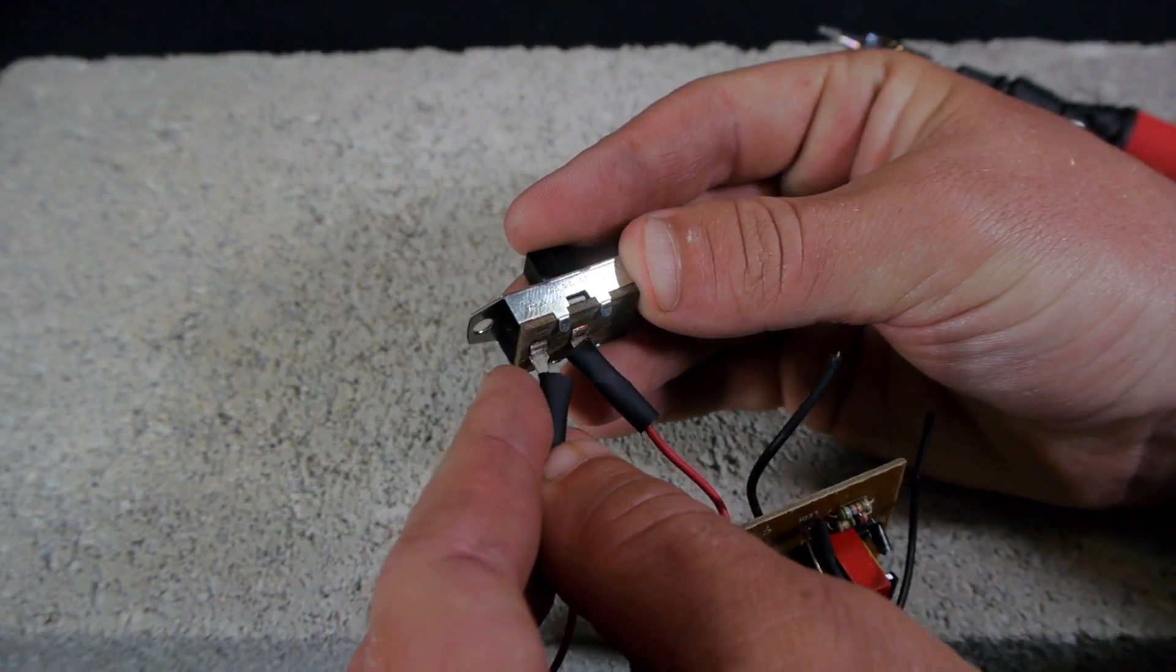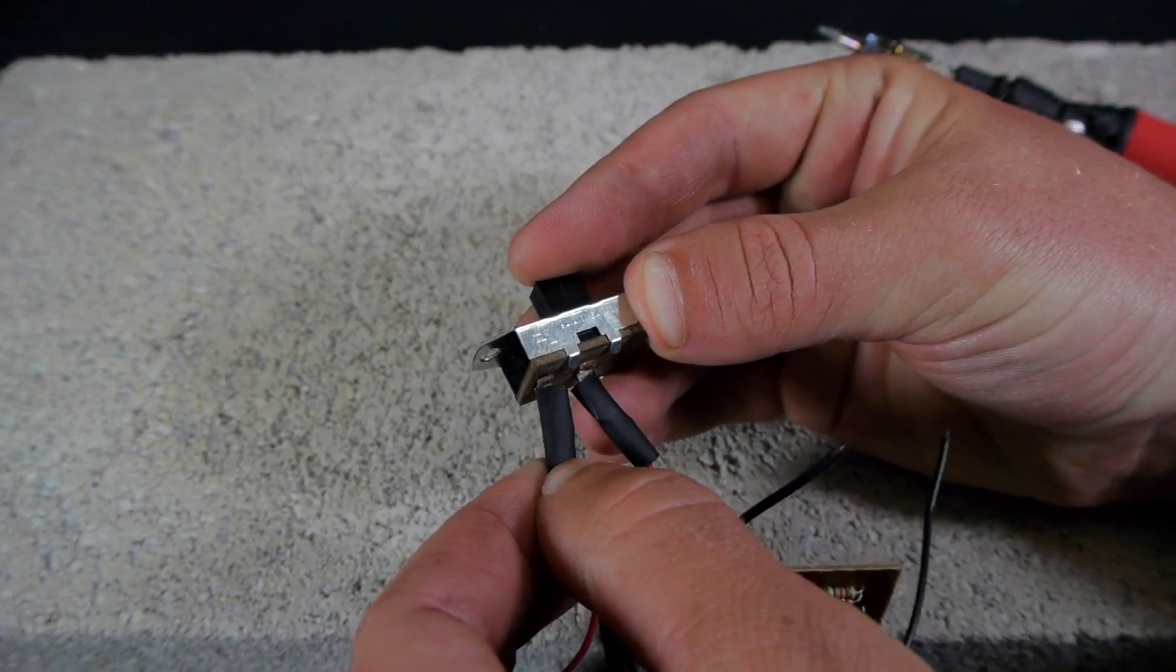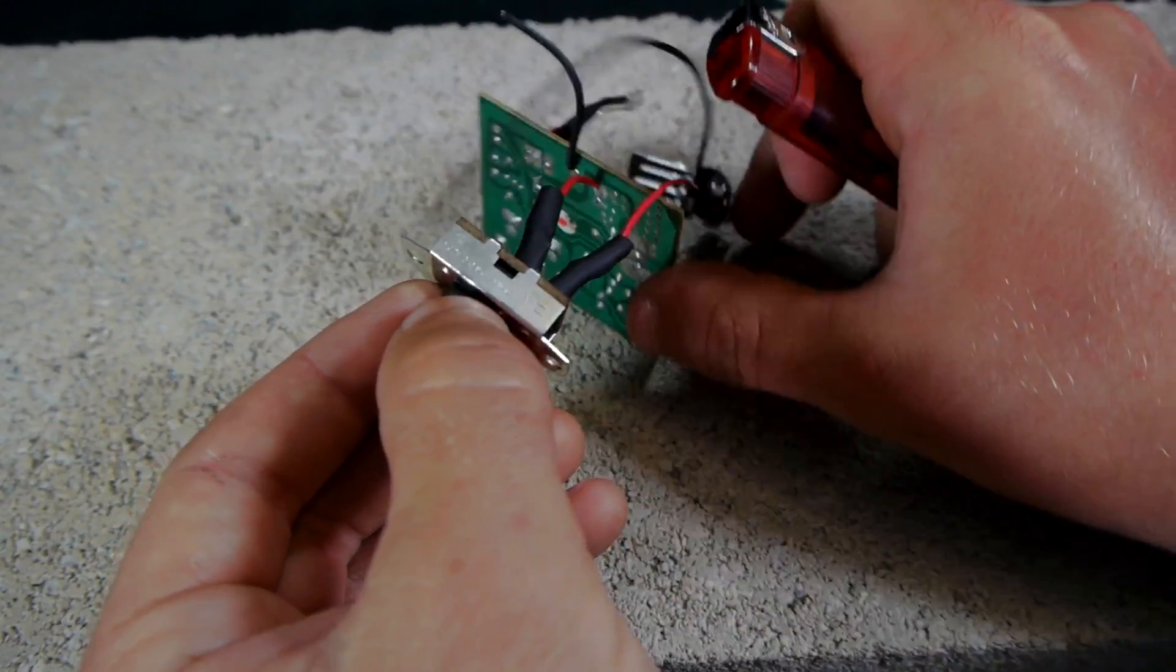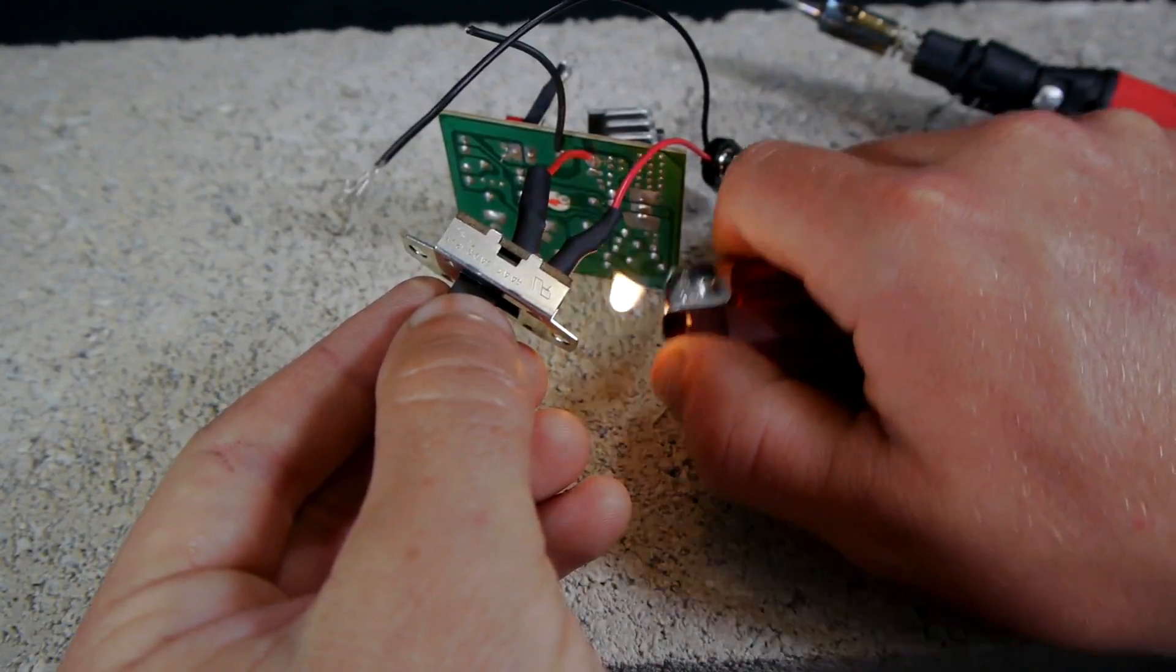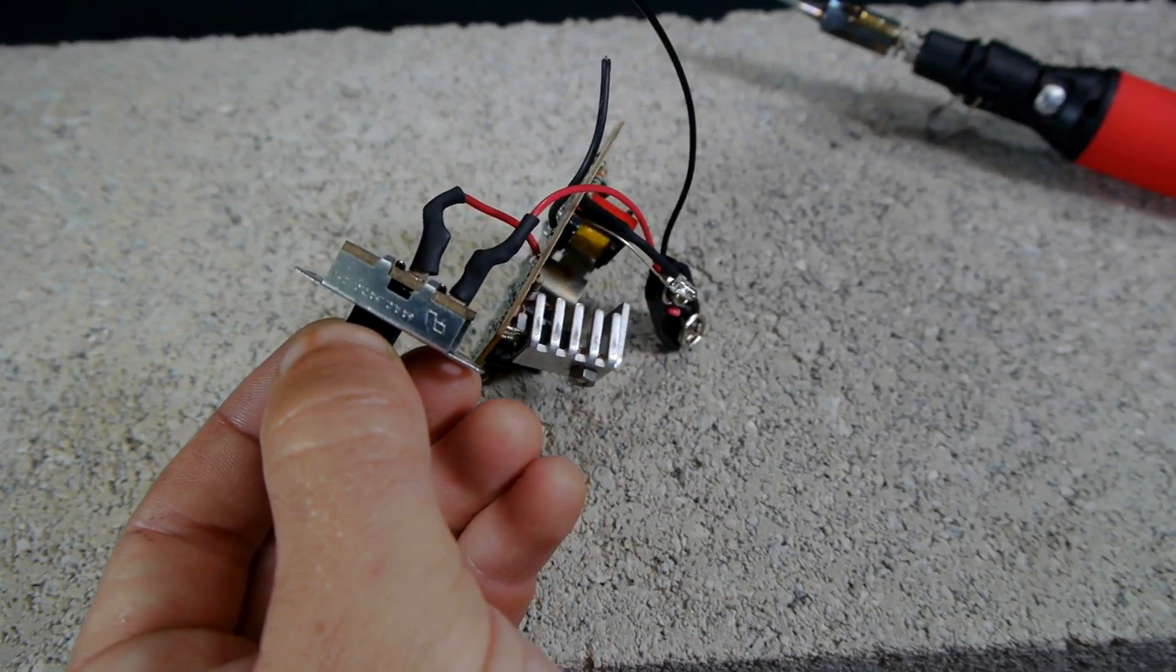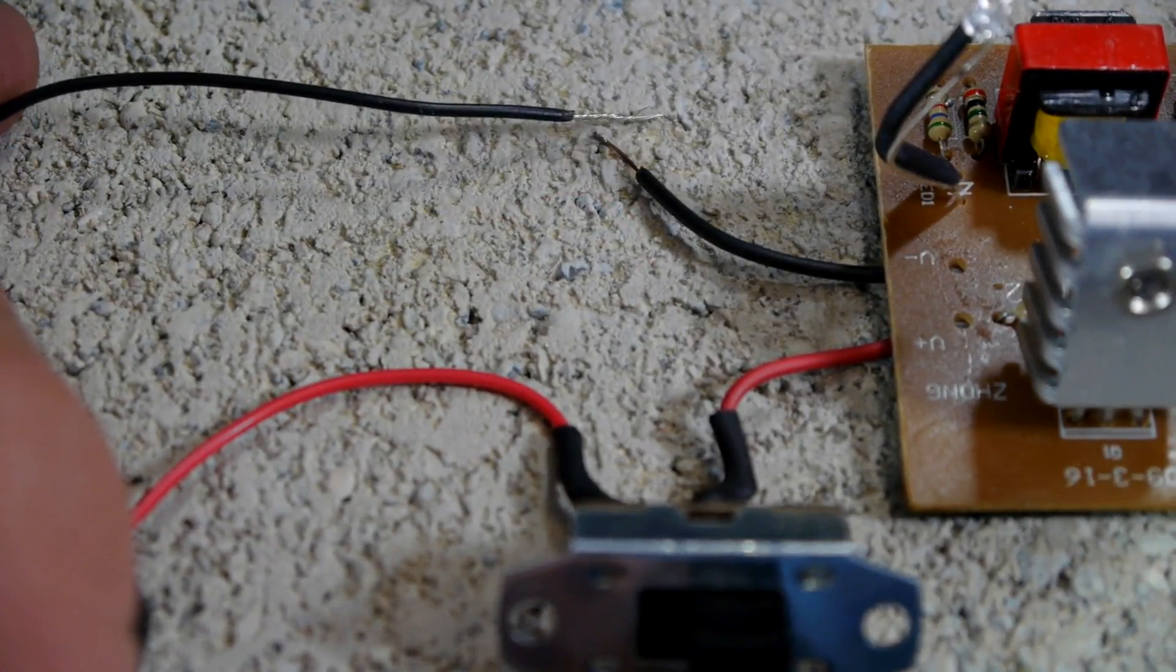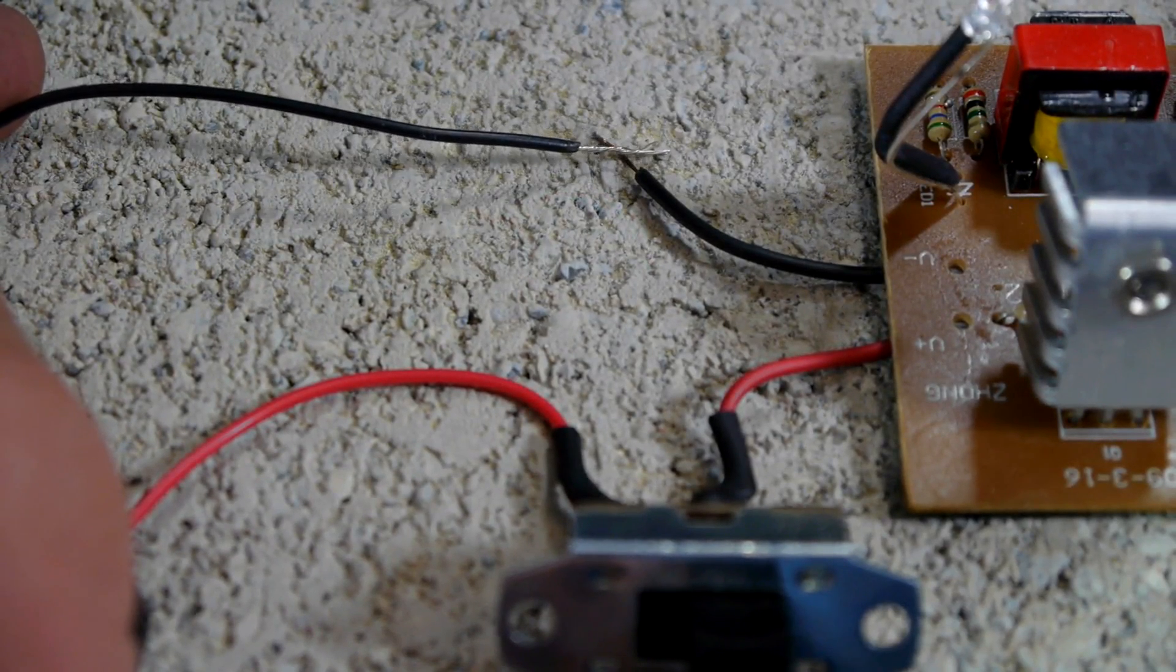Once the solder cools the heat shrink tubing can be pushed up over the connections and using a lighter we can shrink it down to insulate them permanently. Changing our focus now onto the black wires, we can simply connect the two in the middle with a splice.